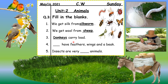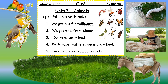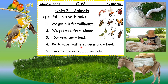Number four: '___ have feathers, wings, and a beak.' Which animals have feathers, wings, and a beak? As you can see on the left side in the pictures — cute, beautiful birds! All birds have feathers, wings, and a beak. So here you write birds, B-I-R-D-S.